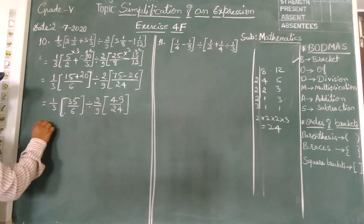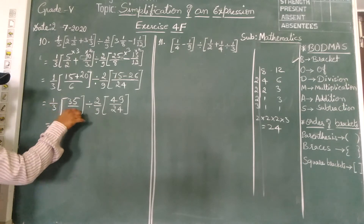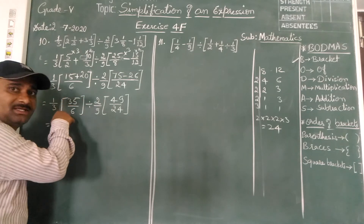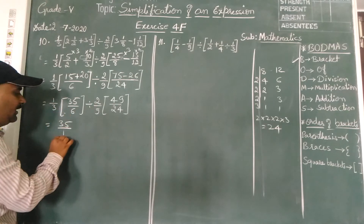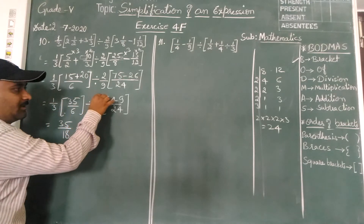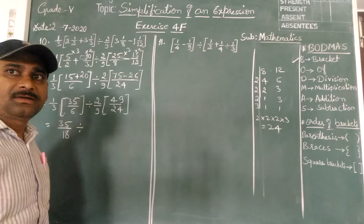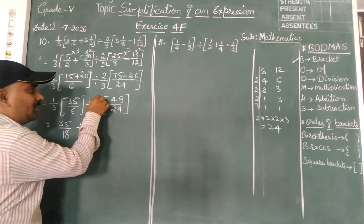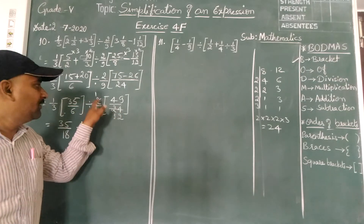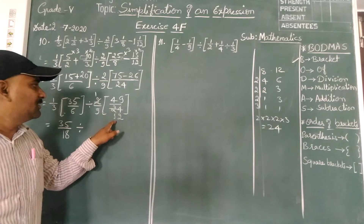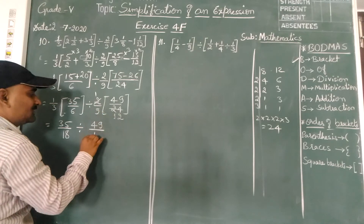Children, multiply to open the bracket — bracket means multiplication. 35 once is 35, divided by 6 threes are 18. Then 49 twos — we can simplify: 2 ones in the numerator and 2 ones in the denominator cancel. Numbers left are 49 once is 49, divided by 12 nines are 108.